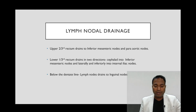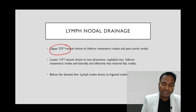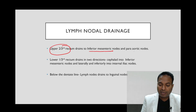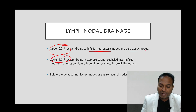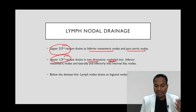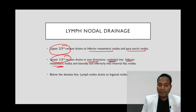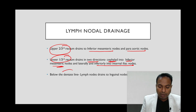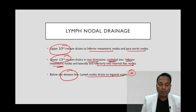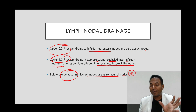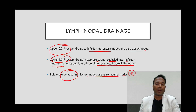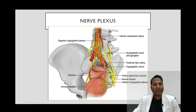Lymph node drainage: upper two-thirds of the rectum drains to the inferior mesenteric nodes and para-aortic nodes. The lower third of the rectum drains cephalad to inferior mesenteric nodes and inferiorly to internal iliac nodes. Below the dentate line, lymphatics drain into the inguinal nodes only — that is why anal cancers always require examination of the inguinal nodes.